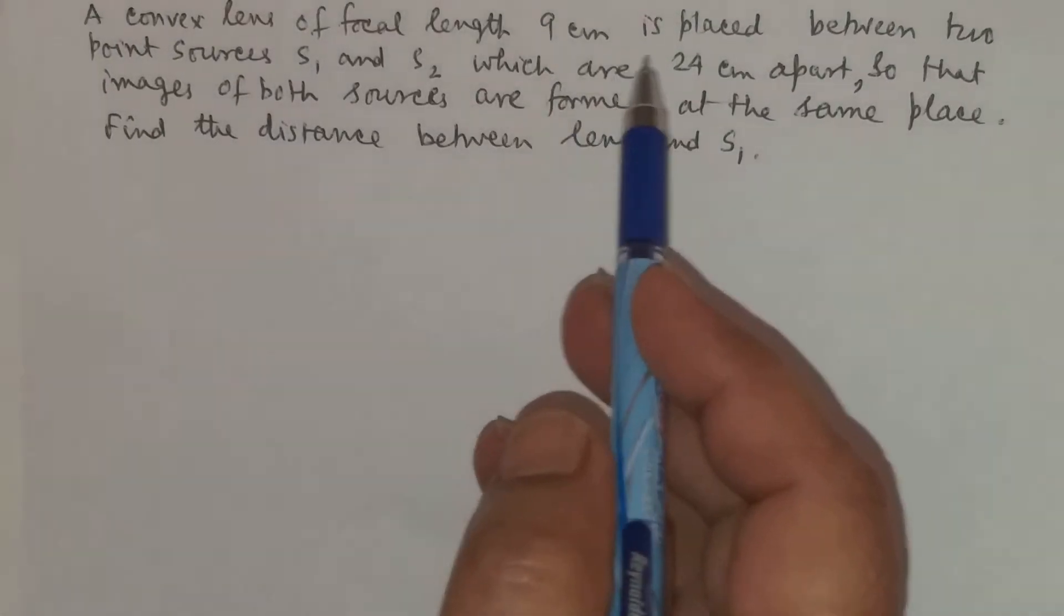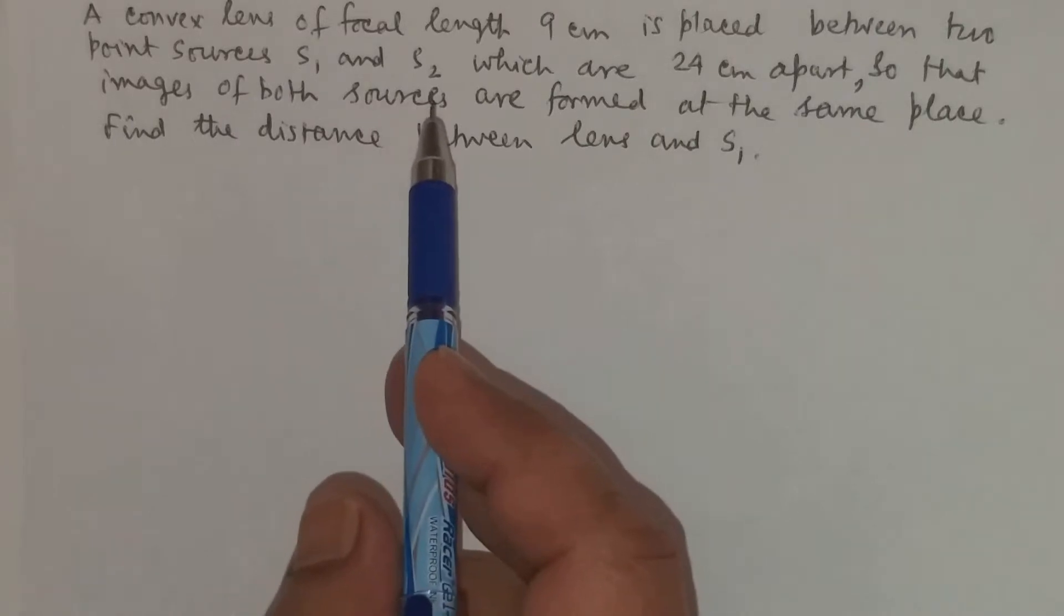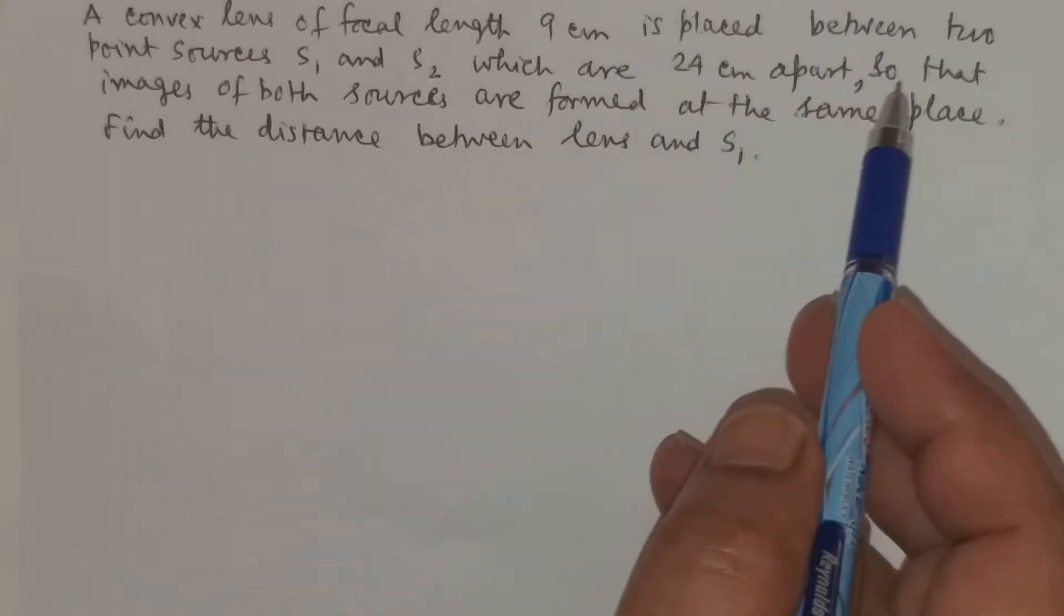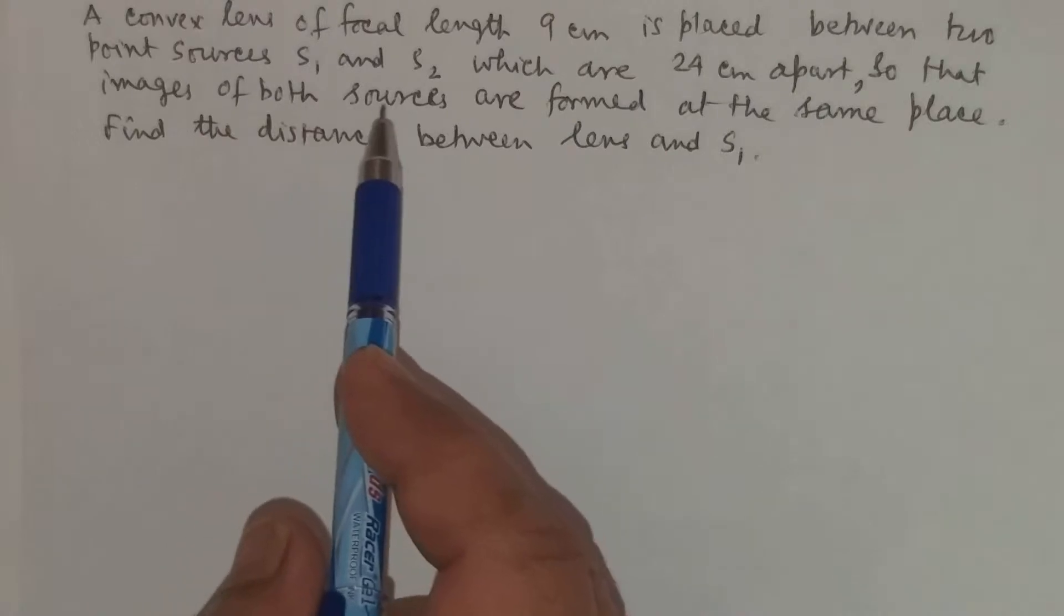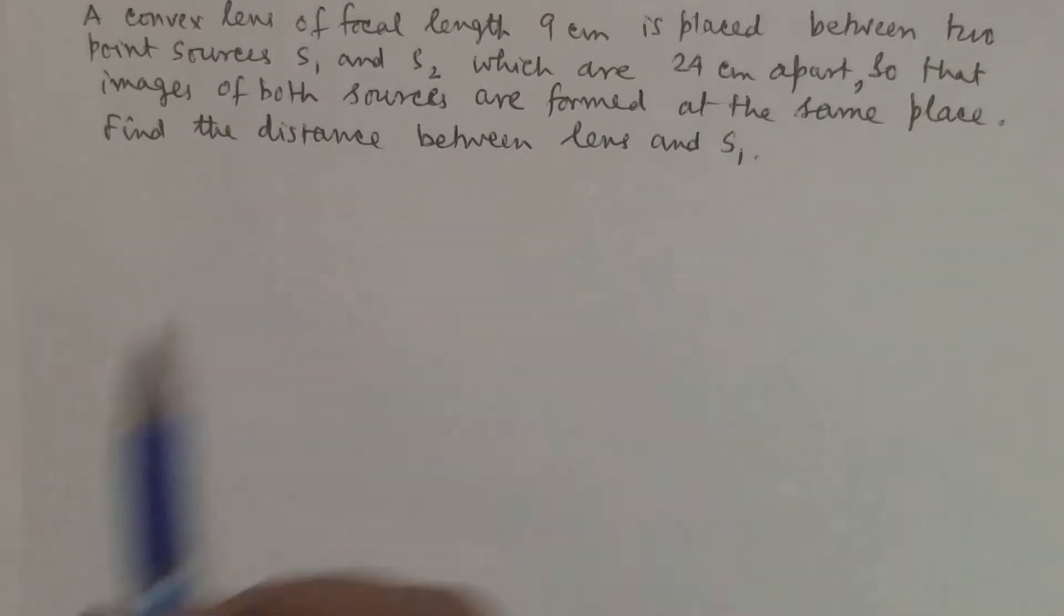A convex lens of focal length 9 cm is placed between two point sources S1 and S2 which are 24 cm apart so that images of both the sources are formed at the same place. Find the distance between the lens.